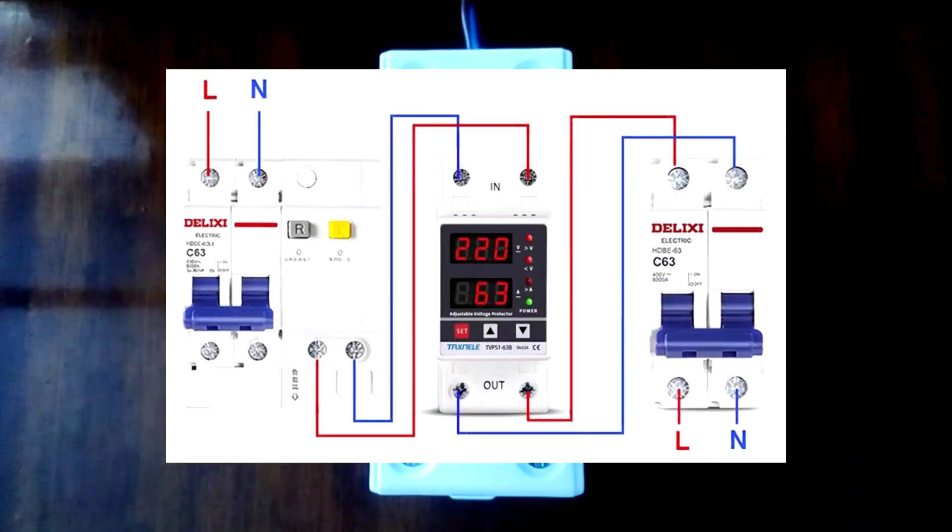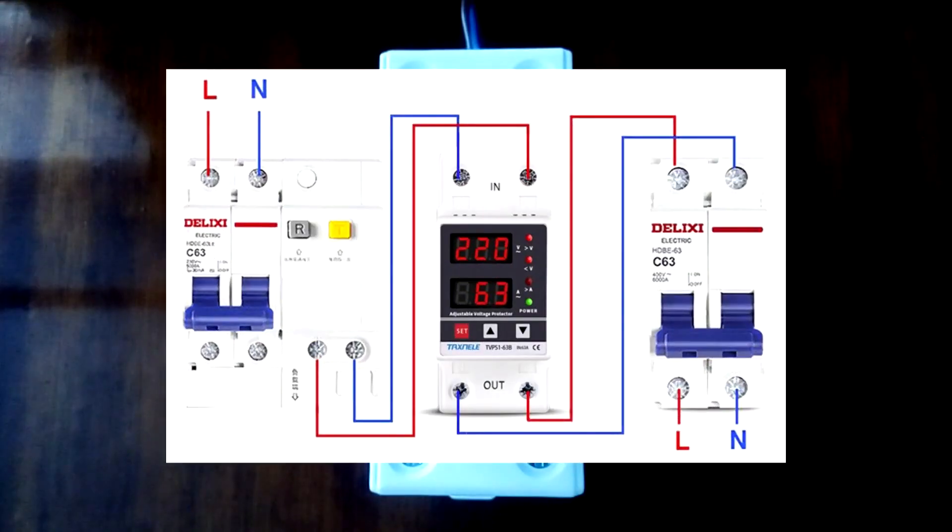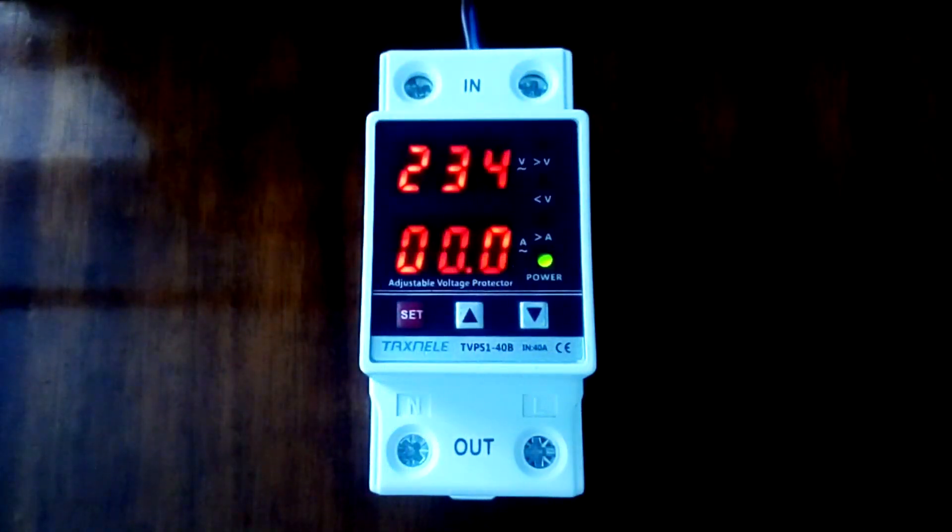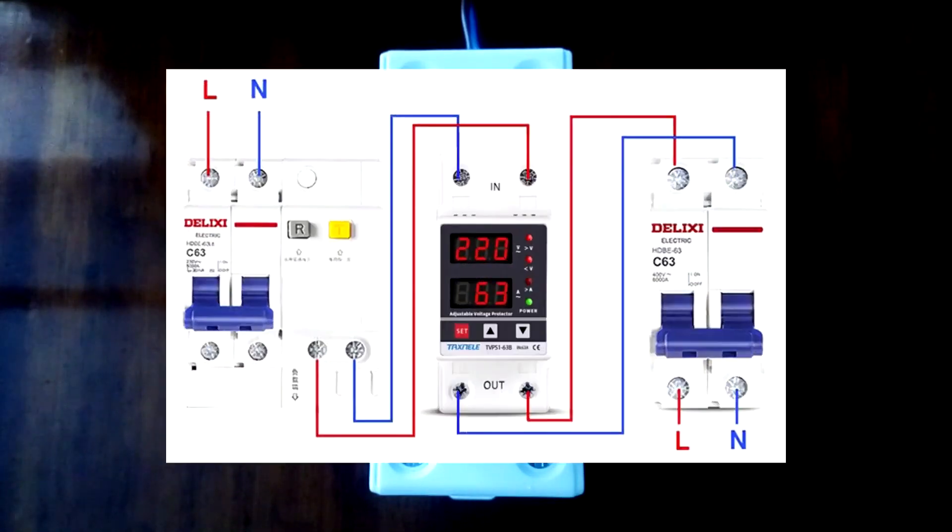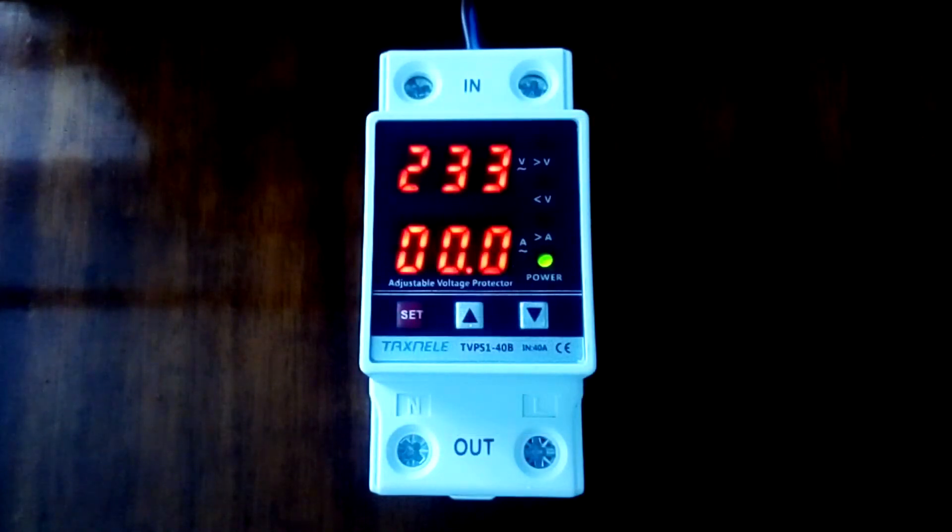This voltage relay is especially distinguished by current protection. You can set the exact current value at which the relay will operate. This allows the machine not to operate in emergency modes. If the rated current of the input circuit breaker is say 25 amperes, and we will install current protection on the relay at 25 amperes, then the machine will not overheat. When the current exceeds 25 amperes, the voltage relay will turn off the load. That is, the voltage relay will work as current protection and the machine will protect against short circuit current. The voltage relay and the circuit breaker must work in pairs since the voltage relay itself does not have short circuit current protection.